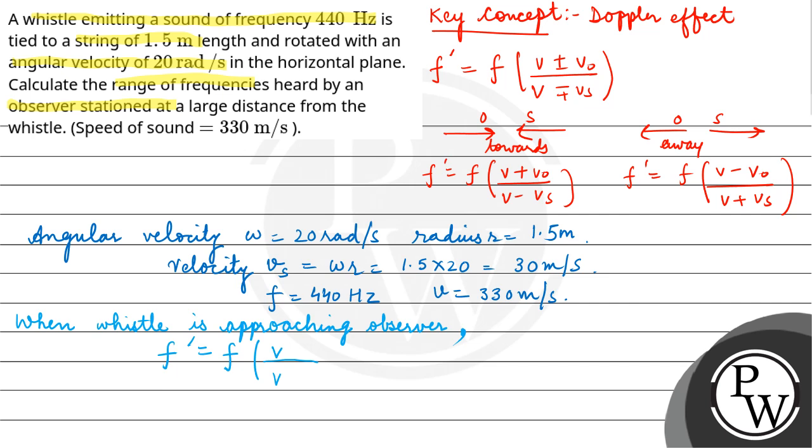Now when the source is approaching the observer, its velocity will be negative. So that means f = 440 × V, which is 330, divided by 330 - 30. So this will be equal to 440 × 330/300, which equals 484 Hz.